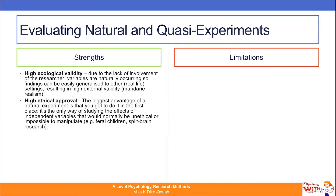There is also high ethical approval. The biggest advantage of a natural experiment is that you get to do it in the first place — it's the only way of studying effects of independent variables that would normally be unethical or impossible to manipulate. Good examples include researchers who investigate feral children or split brain research. It would be highly unethical to put a child in a zoo with lions to study their development, but if it has naturally occurred, you can conduct research following informed consent.